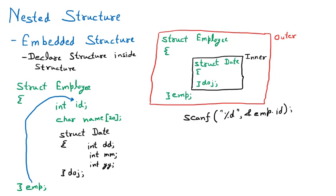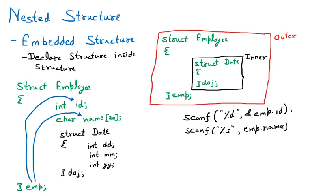Our next task is to take the name as input. We can use gets or scanf. For a string, the address operator is not required, so we write: scanf("%s", emp.name). Now the interesting part: we have to access dd, mm, and yy, which are members of the inner date structure — a structure inside a structure. How do we access that?